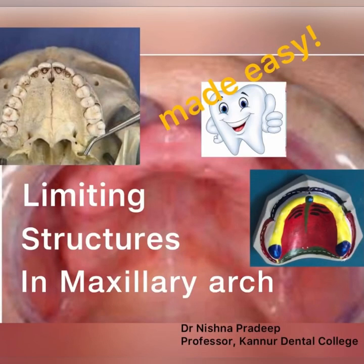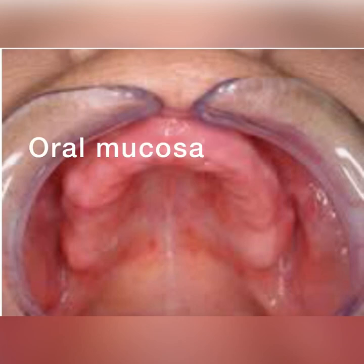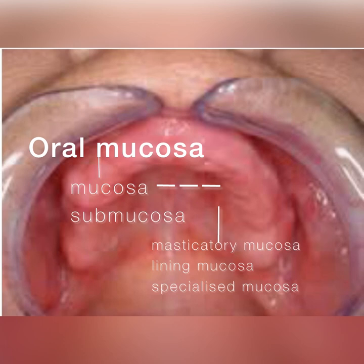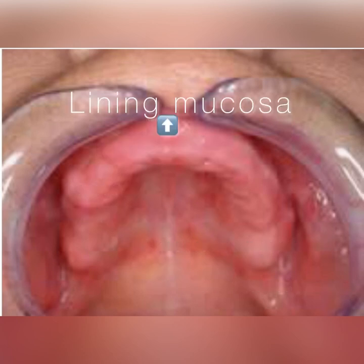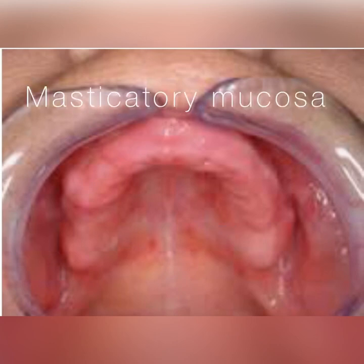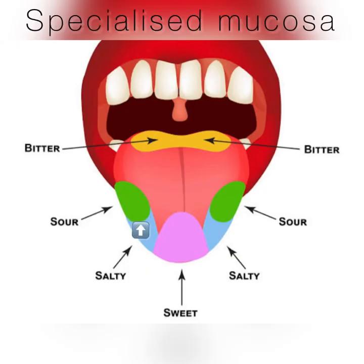Welcome to today's session on limiting structures in the maxillary arch. All structures in the oral cavity are lined by oral mucosa, which has two layers: the mucosa and the submucosa. Mucosa is lined by stratified squamous epithelium and can be of three types: masticatory mucosa, lining mucosa, and specialized mucosa. Lining mucosa covers the lips, cheeks, sulcus, soft palate, and slopes of the residual alveolar ridge, and the epithelium is non-keratinized. Masticatory mucosa has keratinized epithelium, best suited to withstand the forces of mastication, and is seen in the crest of the ridge, rugae area, and hard palate.